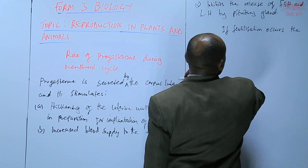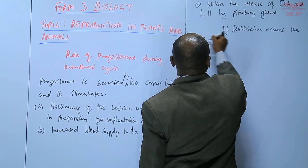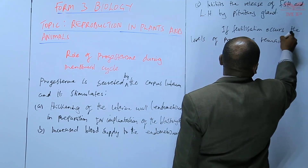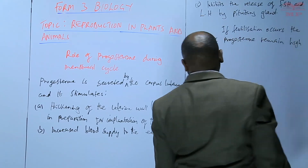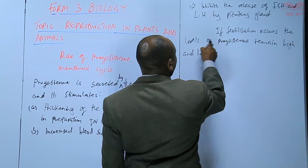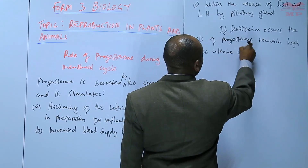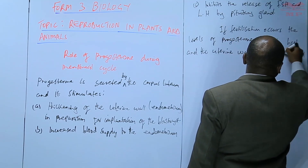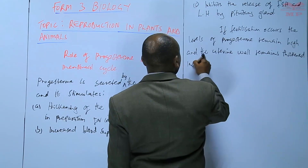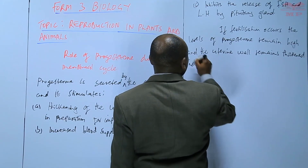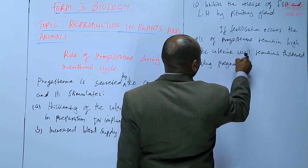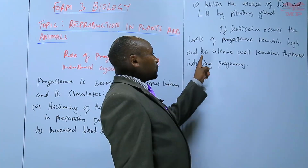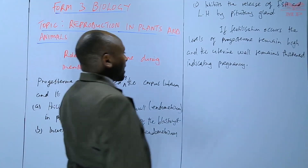If fertilization occurs, the levels of progesterone remain high and the uterine wall remains thickened, indicating pregnancy.